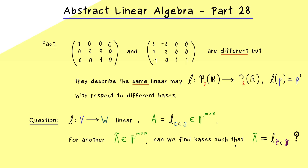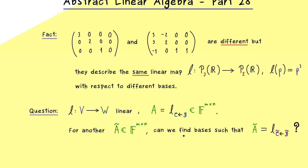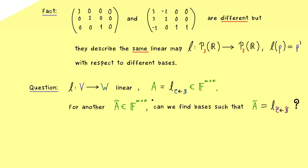We already know that in general the answer would be no, because for example the zero matrix will never represent this linear map. However, in some cases the answer will be yes, and then we call the two matrices equivalent. So this already explains the new term: equivalent matrices.